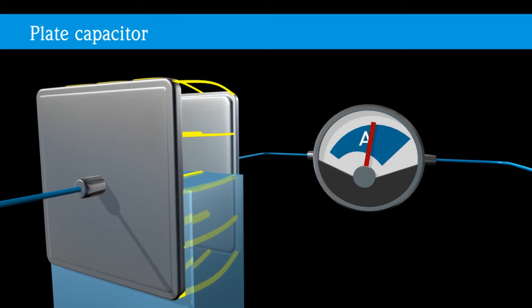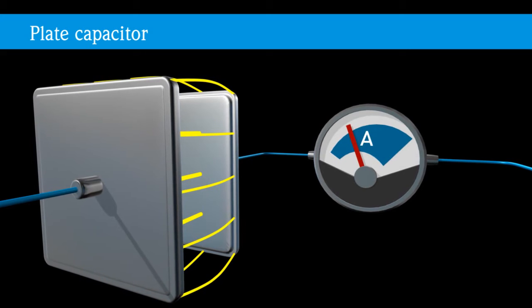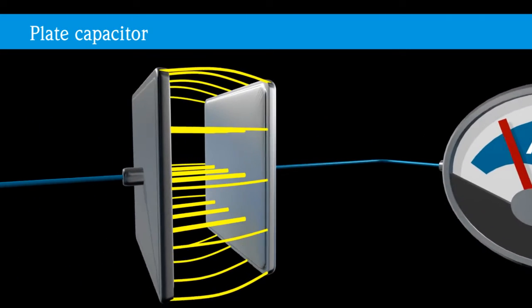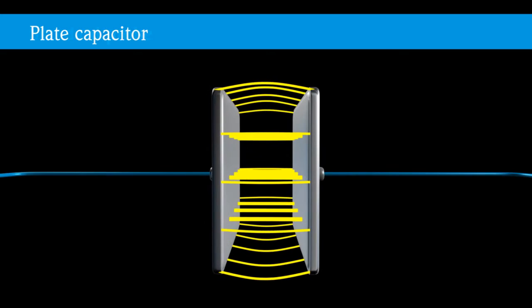The principle of capacitive level measurement depends on capacity changes. This method takes advantage of the fact that products in tanks have a different dielectric constant than air or gases.